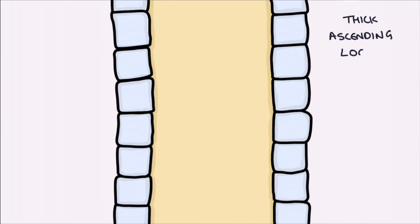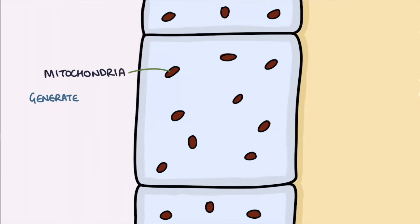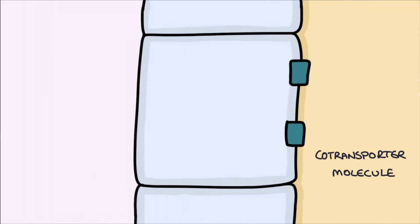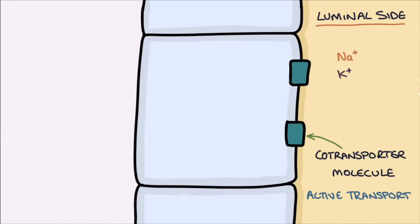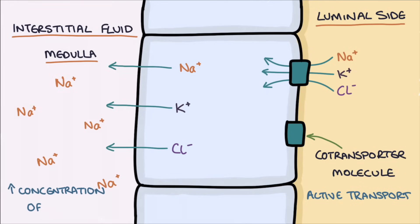The thick ascending loop contains columnar epithelial cells that are tightly packed together, making them impermeable to water, and they contain loads of mitochondria to generate lots of energy. The cells have a co-transporter molecule on the luminal side that uses energy to actively transport sodium, potassium, and two chloride molecules out of the filtrate. These ions then pass out the other side of the cell into the interstitial fluid of the medulla, creating a high concentration of solutes in this area.